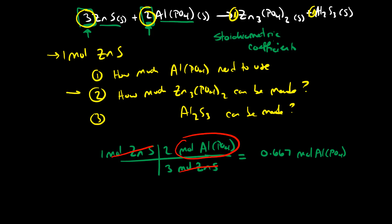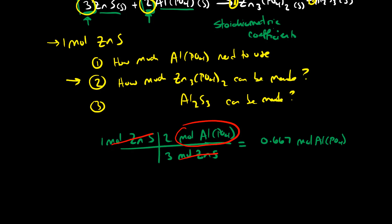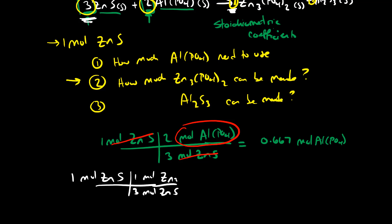Let's try the second question: how much zinc phosphate can be made? Once again we have one mole of zinc sulfide, and from our balanced reaction, for every three moles of zinc sulfide we're going to produce one mole of zinc phosphate. When we do the math, we get 0.333 moles of zinc phosphate that we can possibly make.